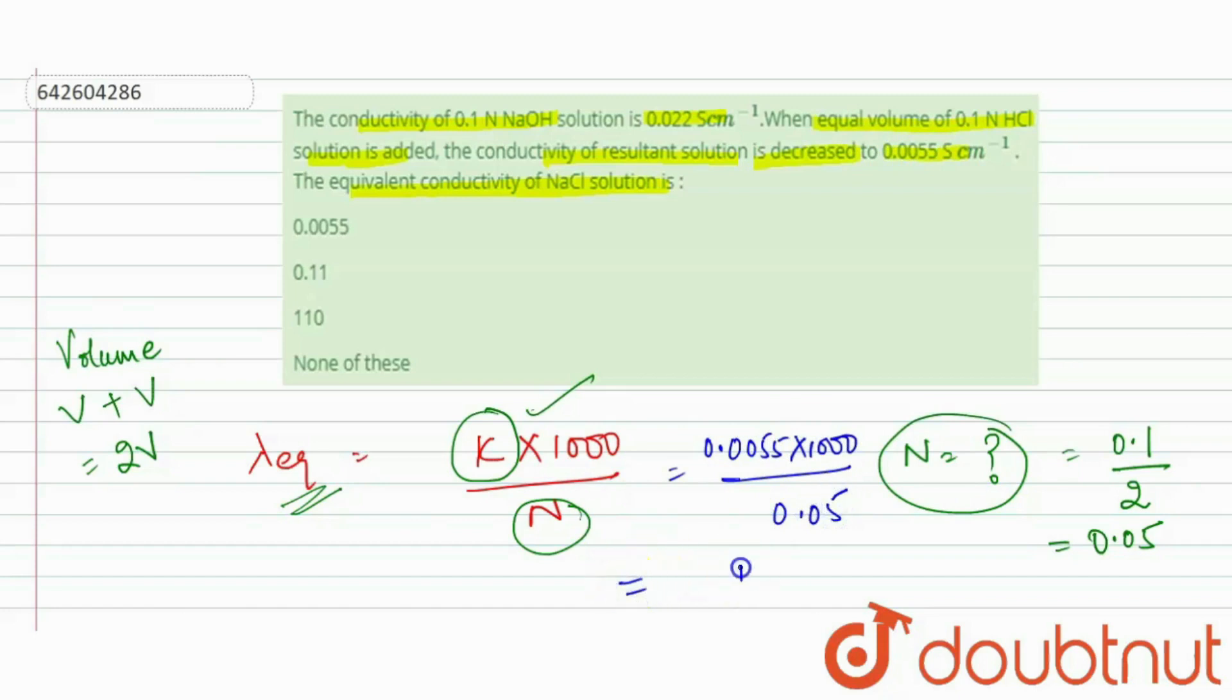If you calculate it, we will get the answer 110. So the equivalent conductivity of NaCl solution is 110. It is our answer. Thank you.